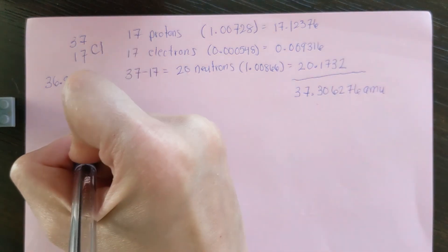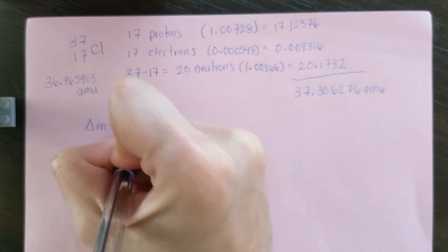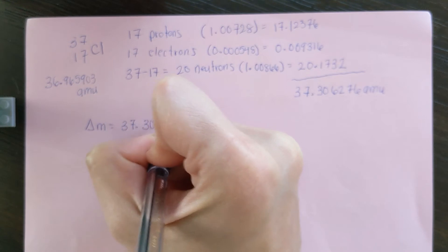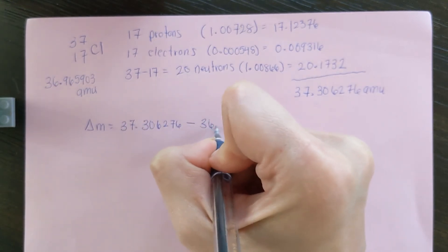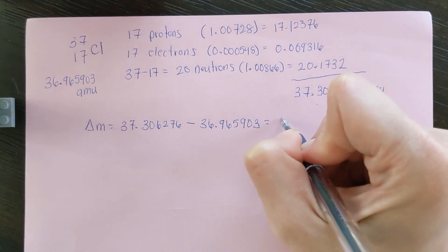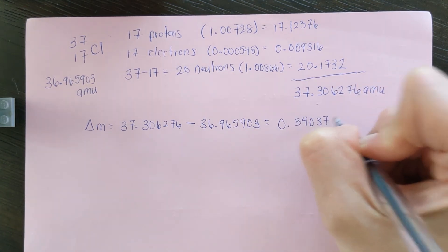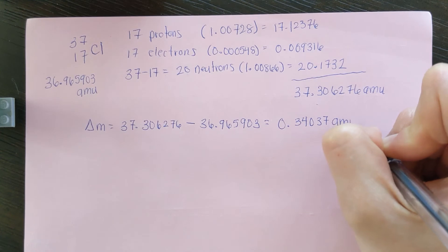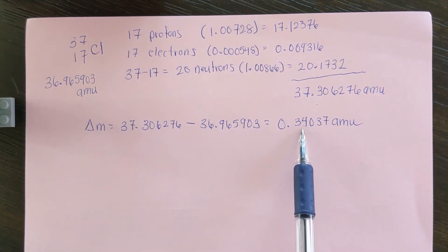So our delta m is equal to 37.306276 subtract 36.965903, which gives us 0.34037 amu. So that is our mass deficit, and that is what is turned into energy to bind the nucleus together.